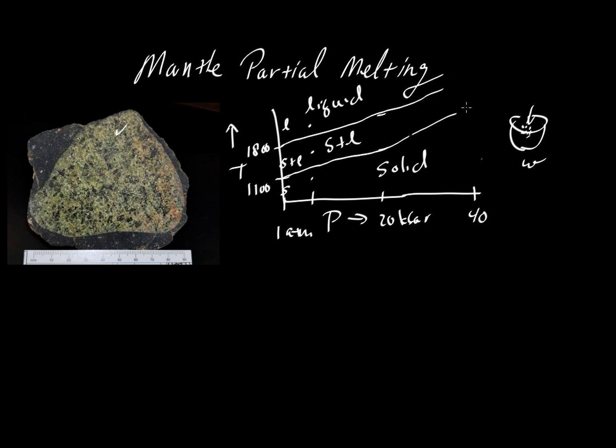Because of this arrangement, we can give these curves a term. We can call this guy the solidus. So everything below the temperature of the solidus is solid. And we can call this guy the liquidus. And so everything above the liquidus is liquid. And everything in between will be some mixture. So we do these kinds of experiments to figure out how the mantle will melt.